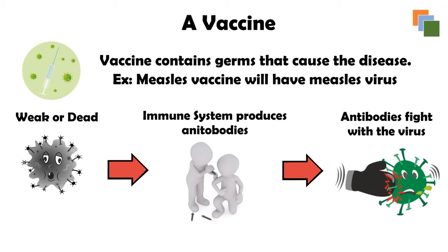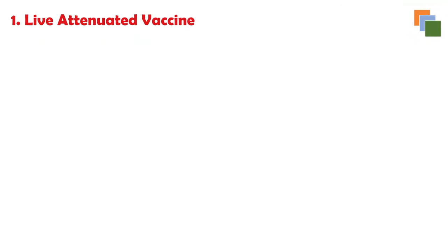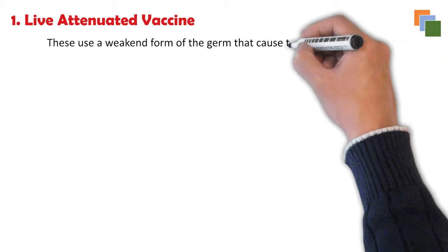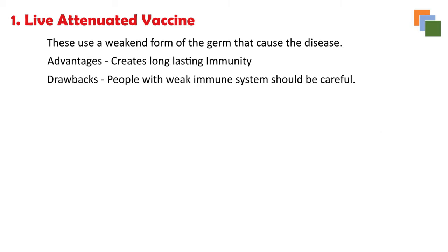Unlike other medicines which treat or cure diseases, a vaccine prevents them. The first type is live attenuated vaccines, which use a weakened form of the germ that caused the disease. The main advantage is that they create a strong and long-lasting immunity, as the virus introduced is very similar to the natural infection. The drawback is that people with weak immune systems should be careful and consult their healthcare providers before using them.